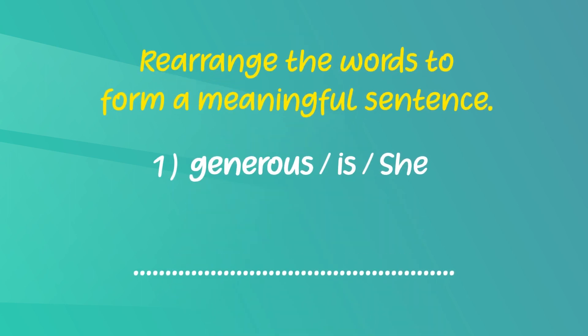Now we'll do a simple activity. In this activity you have three sentences but the words in these sentences are jumbled. What you have to do is rearrange the words to construct a simple sentence. Let's start with the first one and do it together. As you can see there are three words here: generous, is, she.